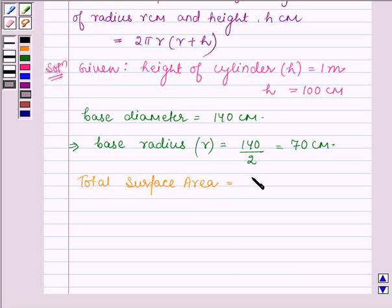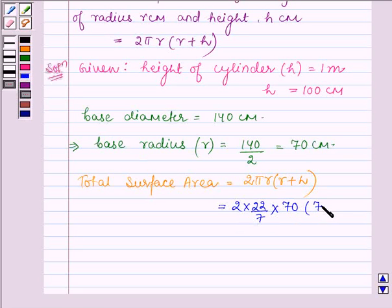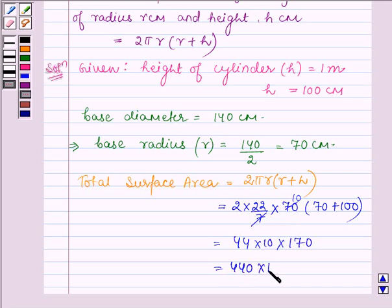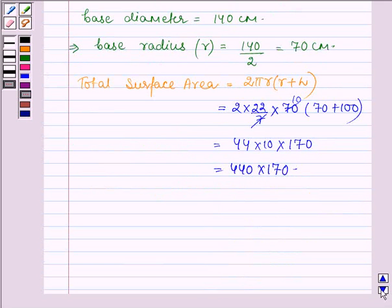This is equal to 2πr(r + h). Now substituting the values of π, r, and h, we have 2 × 22/7 × 70 × (70 + 100). We further have 2 × 22/7 × 10 × 170, so we have 440 × 170, which gives 74,800 cm².